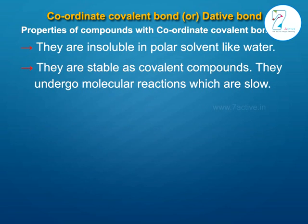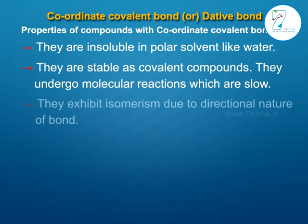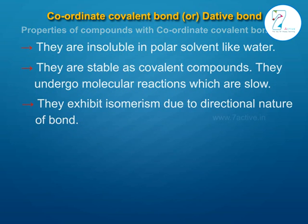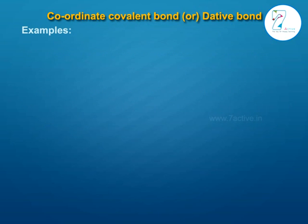Coordinate compounds are as stable as covalent compounds. They undergo molecular reactions which are slow, and they exhibit isomerism due to the directional nature of the bond.